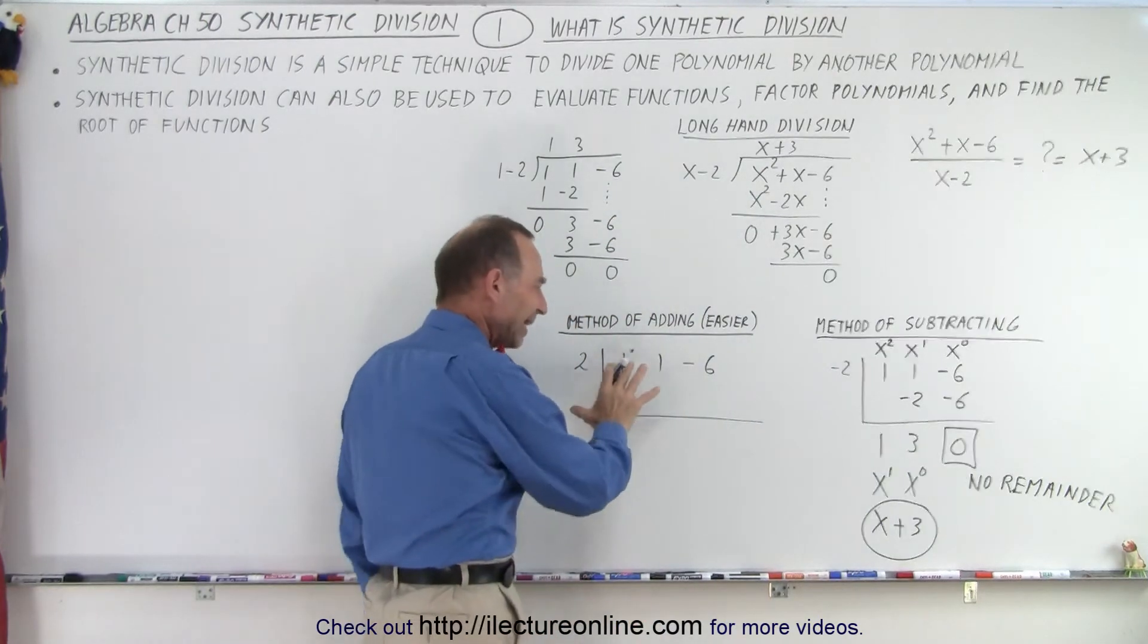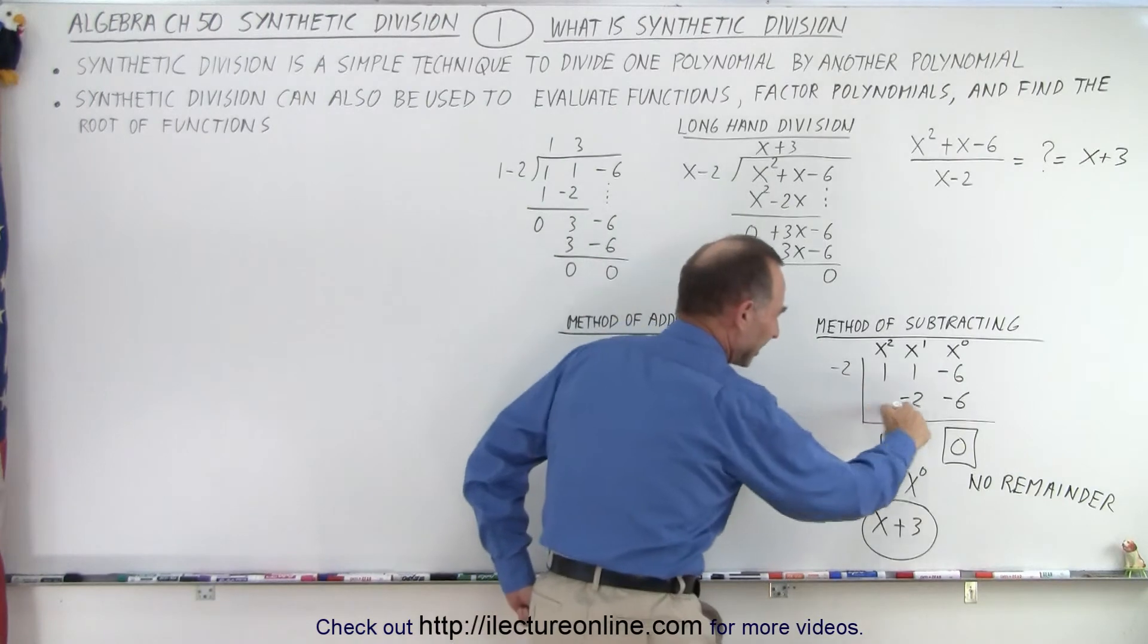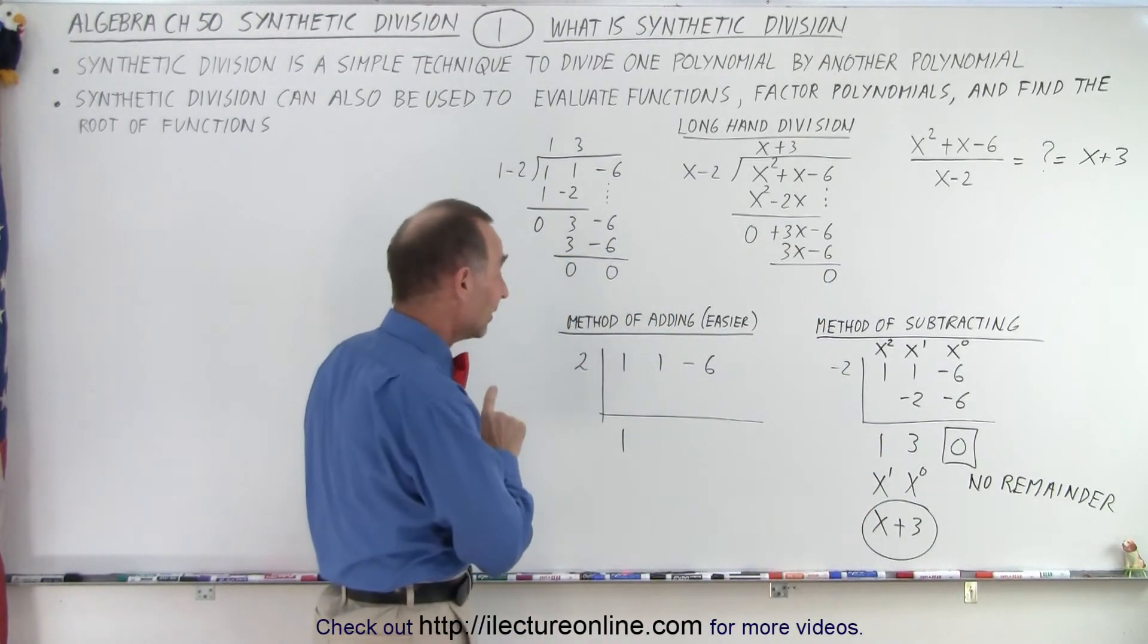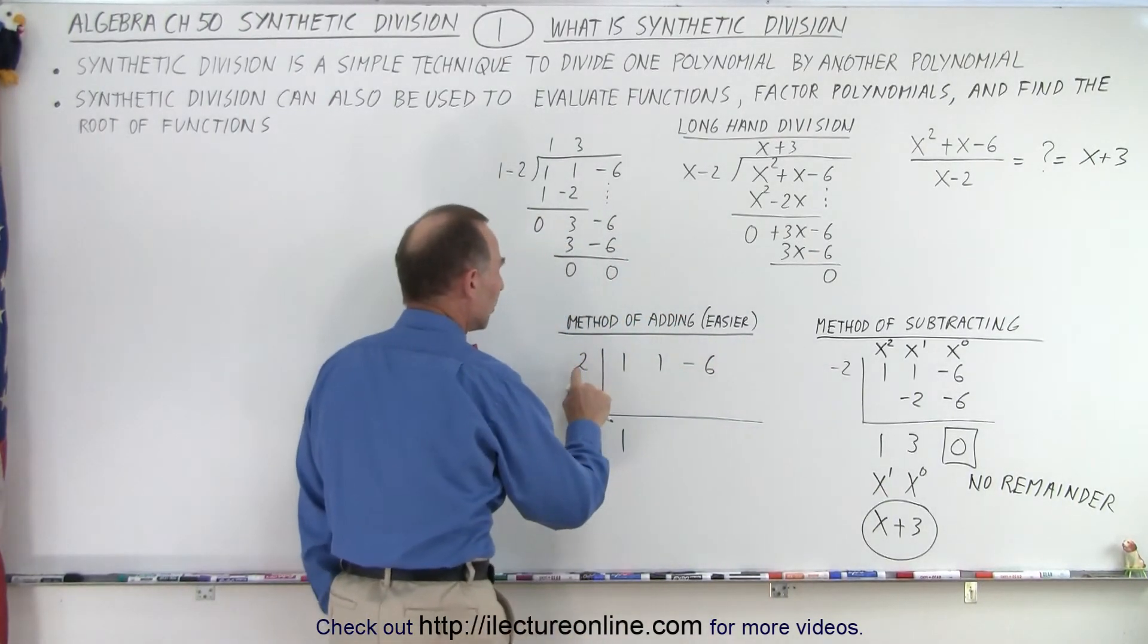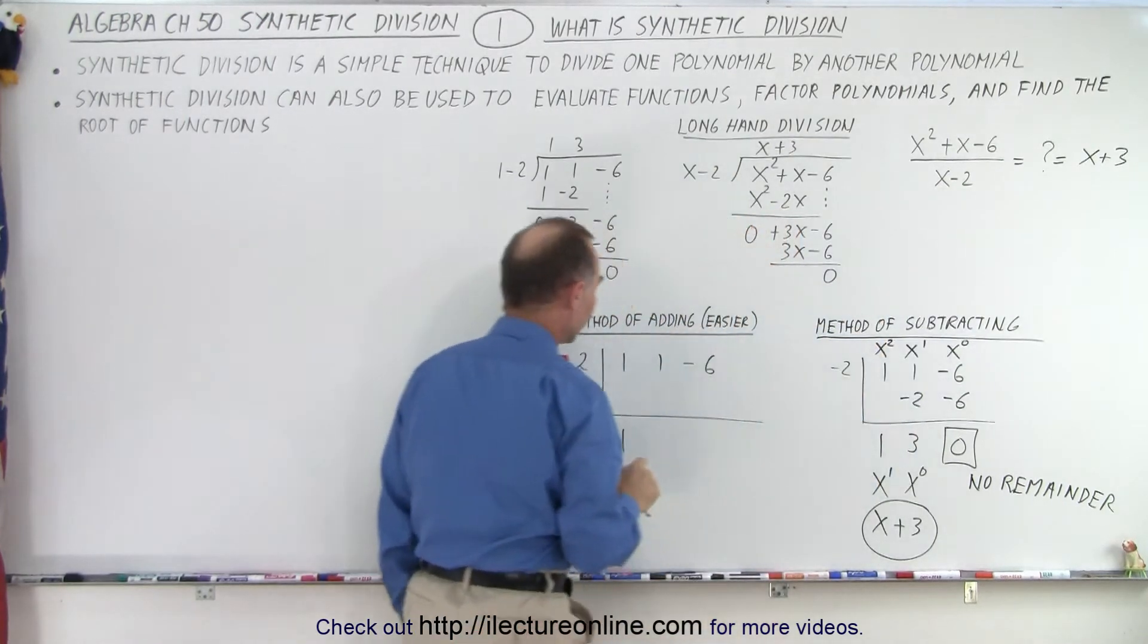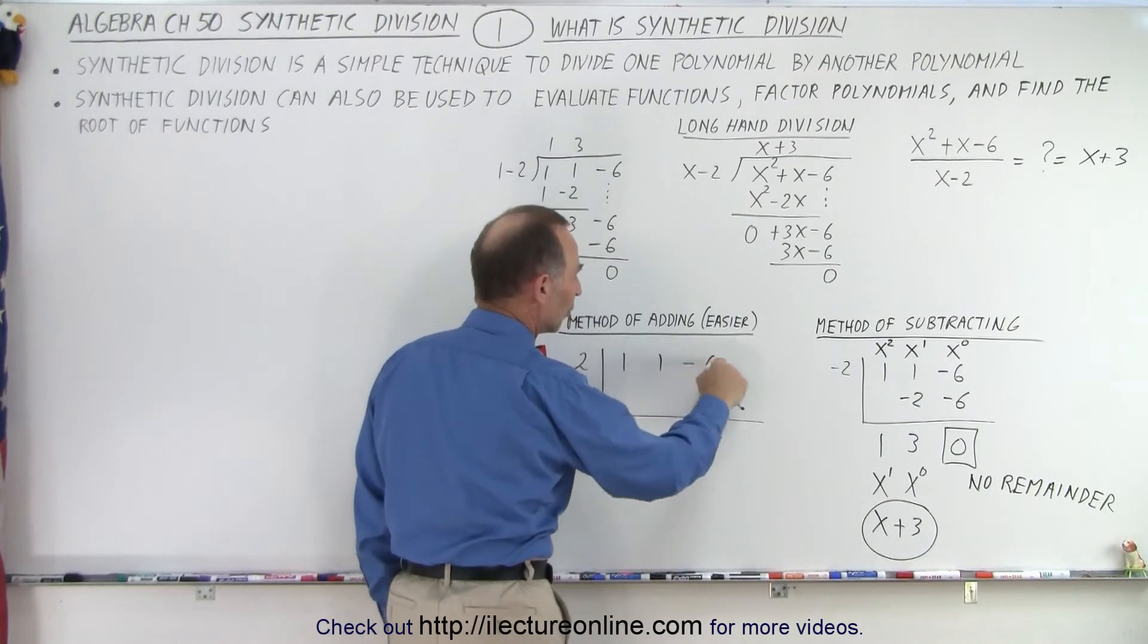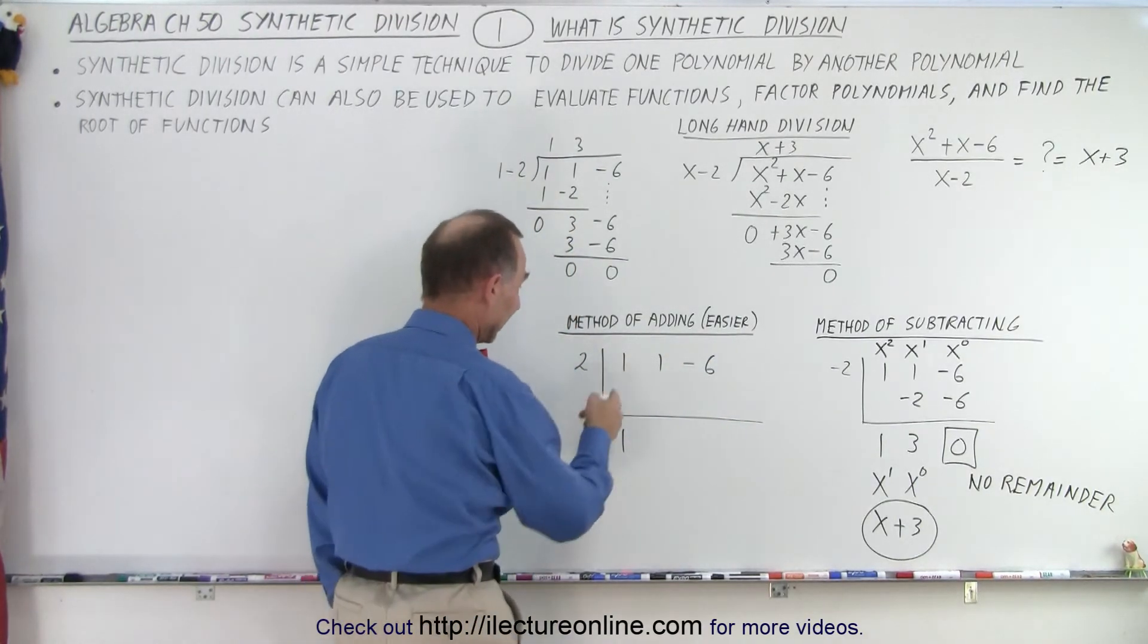Now why is this method easier? Well, the reason is that here we have to subtract these numbers from the numbers above, and subtracting negative numbers is always a mess. So instead, what we're going to do is, instead of writing negative 2 here, we make that into a positive 2. We simply change the sign of that. And so when we have a positive 2 there, now we have to add these numbers to the numbers above it, which makes it a lot easier.